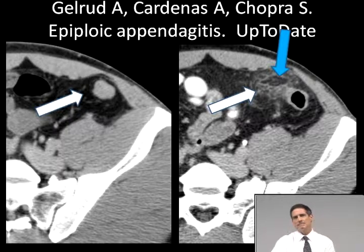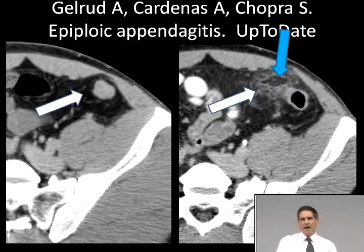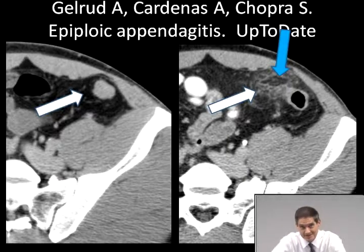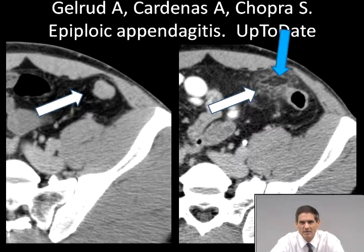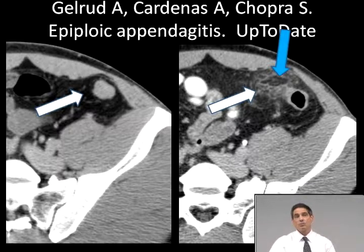From UpToDate: epiploic appendagitis is a benign and self-limited condition in which abdominal CT scan appearance can lead to a confident diagnosis. Patients can be managed conservatively with oral anti-inflammatory medications and occasionally a short course of opioids.